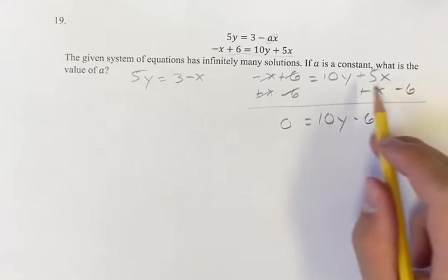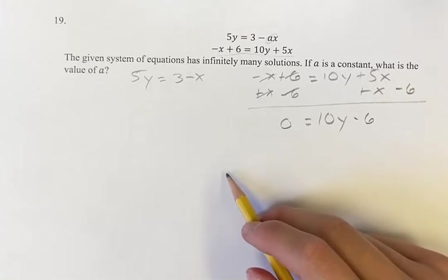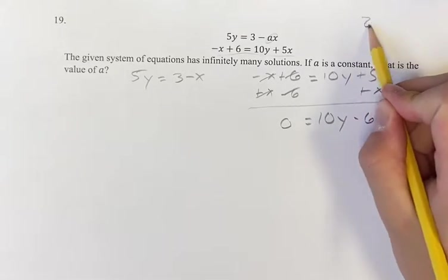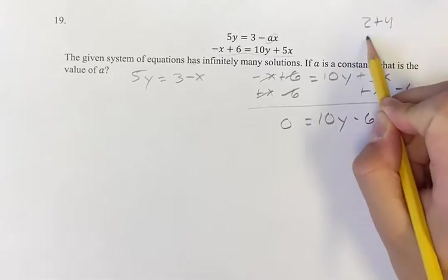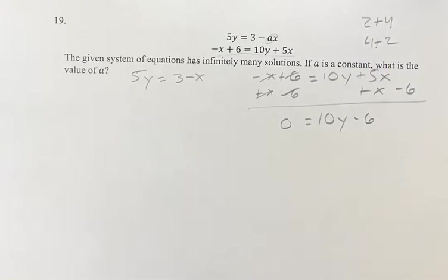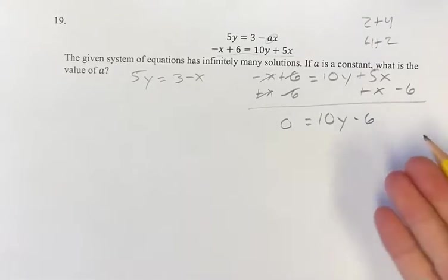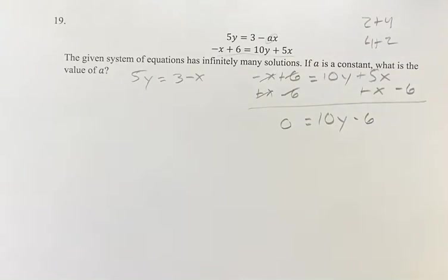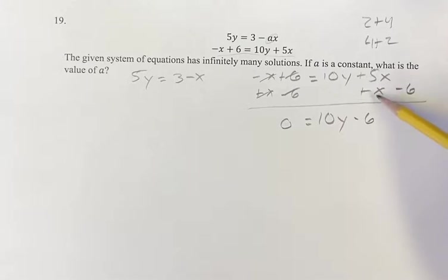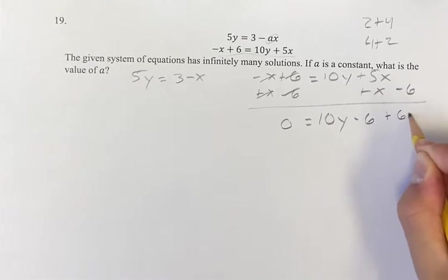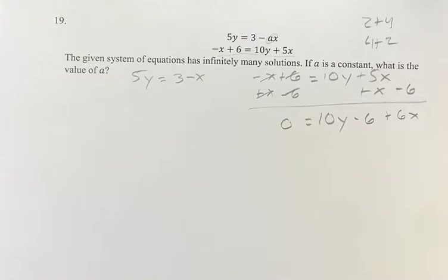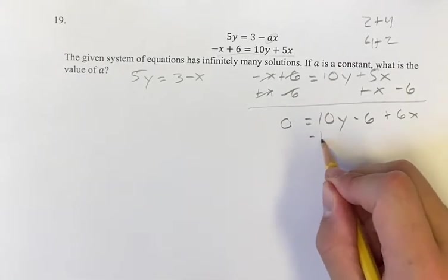It doesn't really matter which one we do first, because 2 plus 4, 4 plus 2 — they're both equal to 6. The order doesn't matter, so we're just going to move the negative 6 over so it looks a little bit more similar. And then 5x plus x is plus 6x. Now this is looking a little bit more similar, but we still have to get the y on the other side.